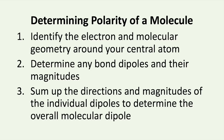The second step is to determine any bond dipoles and their magnitudes. You can do this by comparing the electronegativity values. It is also important to remember that electrons have a negative charge, so lone pairs will have a negative dipole with the positive end pointed at the nucleus of the central atom. The last step is to sum up the directions and magnitude of the individual dipoles to determine the overall molecular dipole.